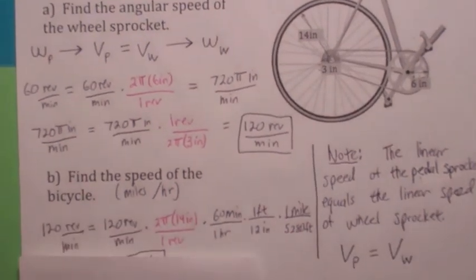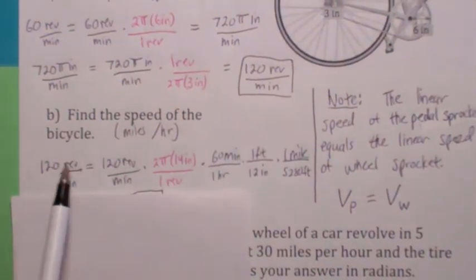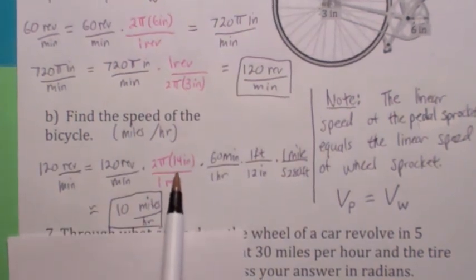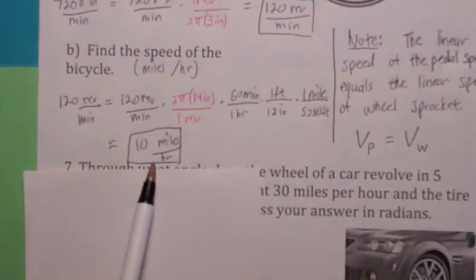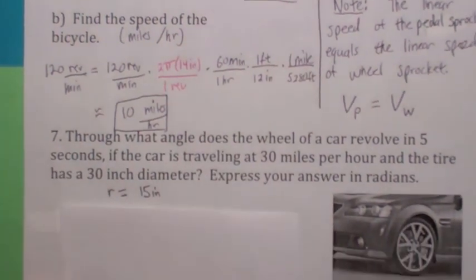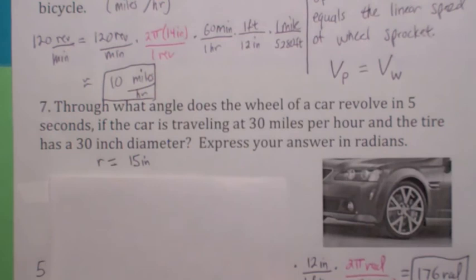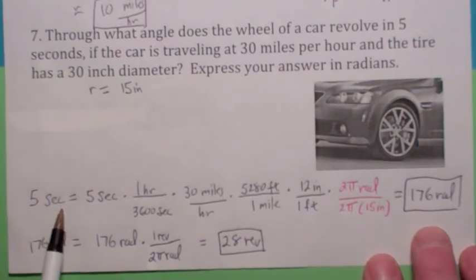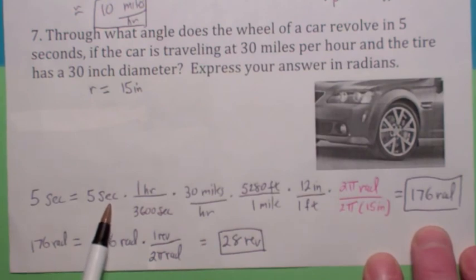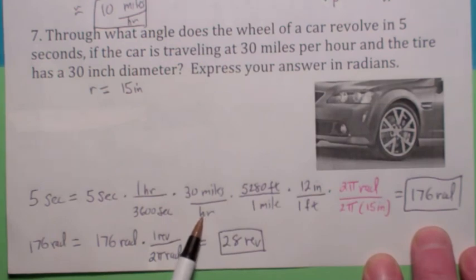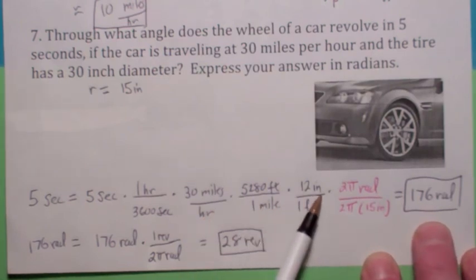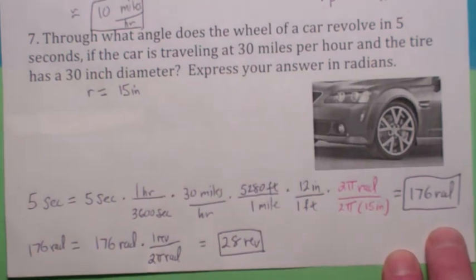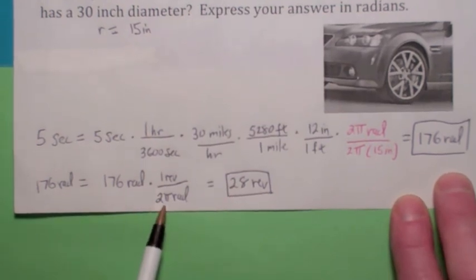Now what is the speed of the bike? To find the speed of the bike, convert the angular speed to linear speed: in one revolution you've gone 2 pi times the radius of 14 inches. That gives you 10 miles per hour. For the last problem: through what angle does a car wheel revolve in 5 seconds if you're going 30 miles per hour with a 30-inch diameter wheel, meaning a 15-inch radius? Convert 5 seconds to hours, multiply by 30 miles per hour to get miles, then convert miles to feet, feet to inches, and inches to radians. The final answer is 176 radians. You could also convert to revolutions by multiplying by one revolution per 2 pi radians.